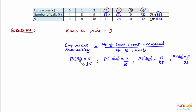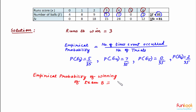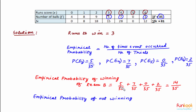Team B can win if any of these events E3, E4, E5, or E6 occur, so the probability of team B winning is the sum of all these probabilities: 5 by 35 plus 7 by 35 plus 0 by 35 plus 2 by 35, which equals 14 by 35. The empirical probability of not winning is 1 minus 14 by 35, which comes to 21 by 35.